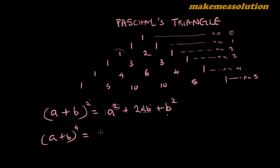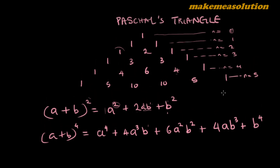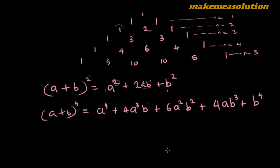Similarly, (a+b)⁴ = a⁴ + 4a³b + 6a²b² + 4ab³ + b⁴. There's a gradual decrease in the power of a and a gradual increase in the power of b. This is binomial expansion using Pascal's triangle — and differentiation also follows the same pattern.